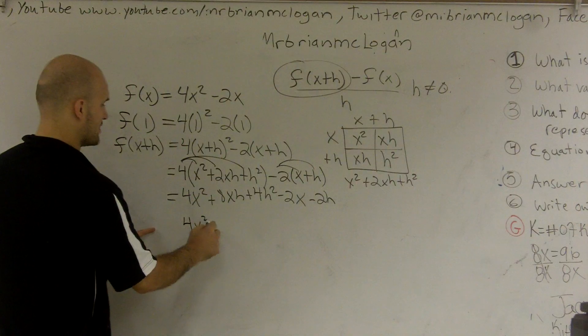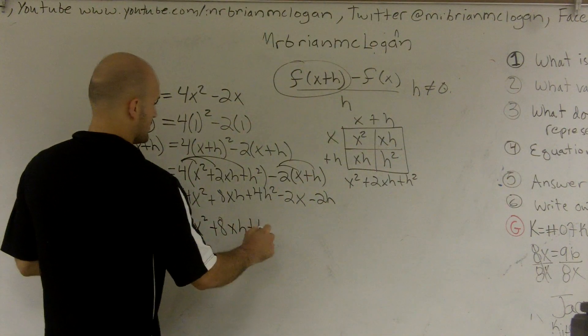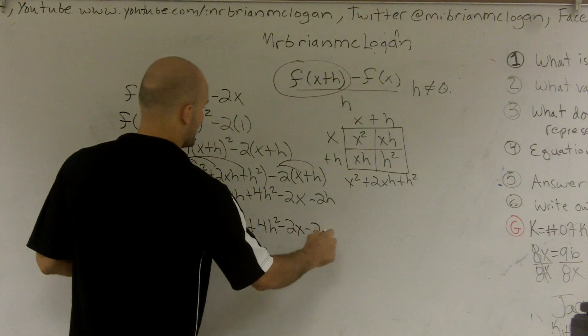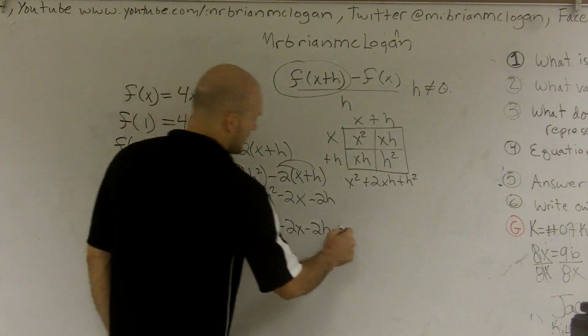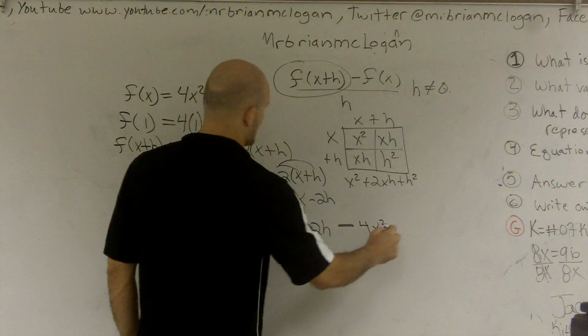So I take 4x squared, I'm just going to rewrite it all over again, plus 8xh plus 4h squared minus 2x minus 2h minus f(x), which is 4x squared.